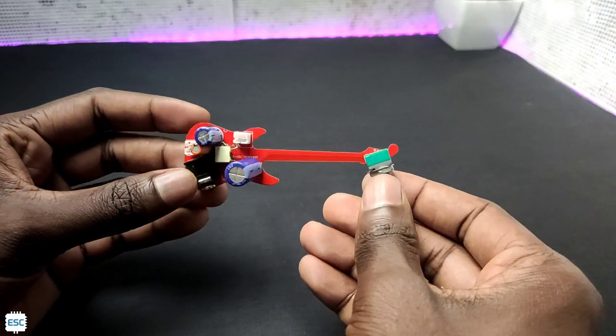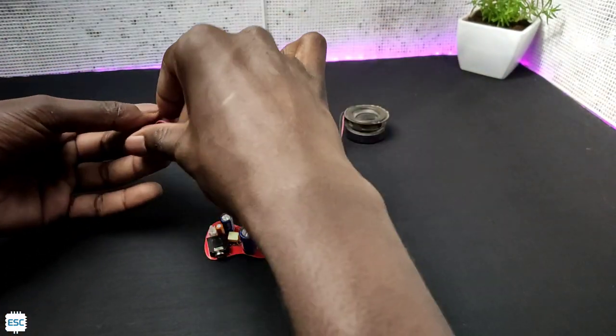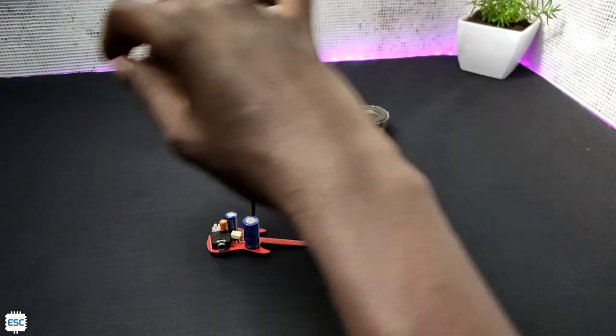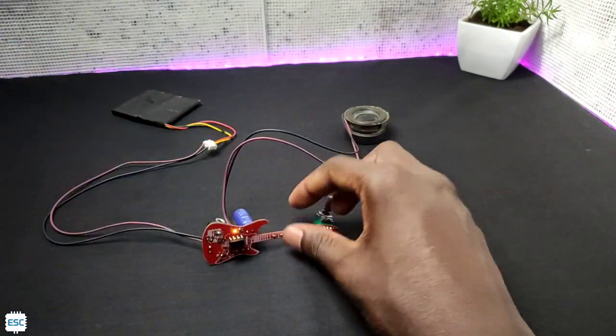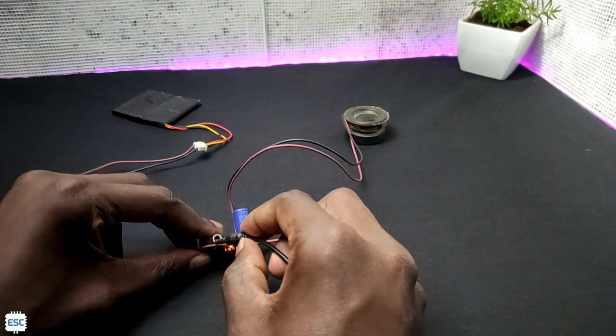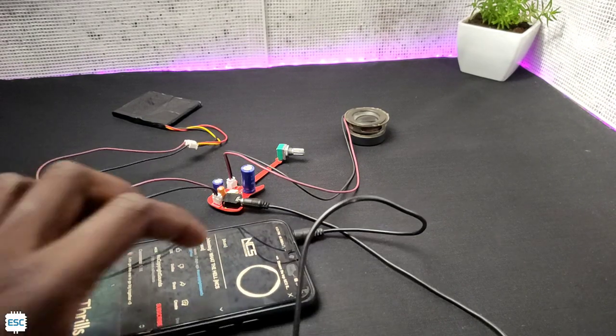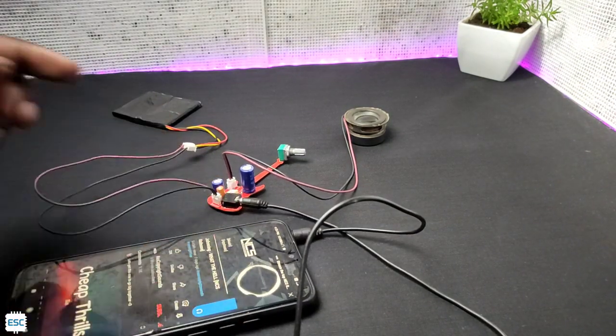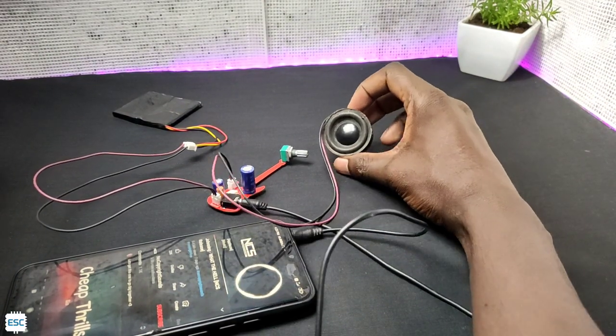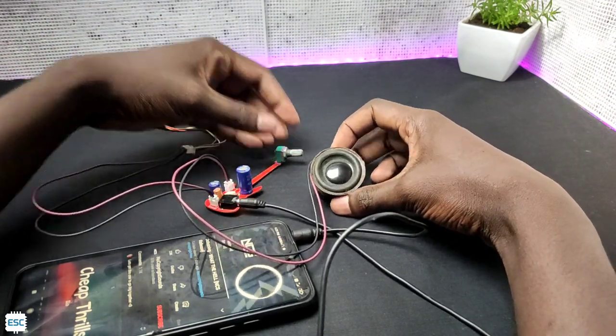After finishing the soldering job, our PCB looks like this. Now let's do the first test. So I connected a 3W speaker, a battery, and finally the aux cable. Now you can see the working.